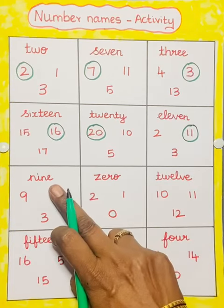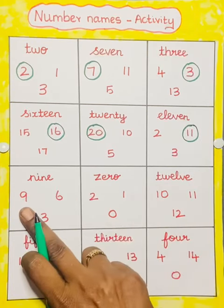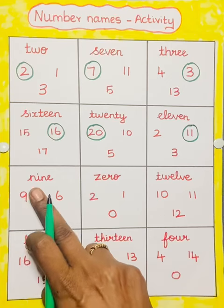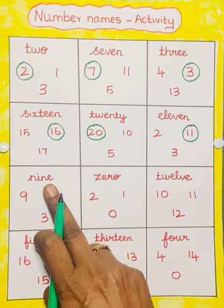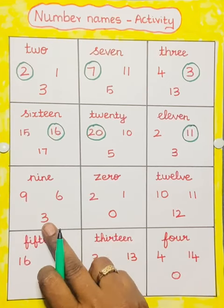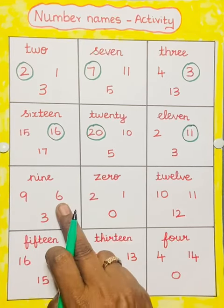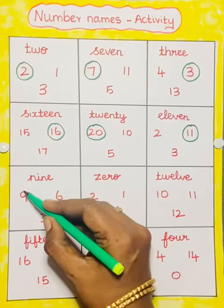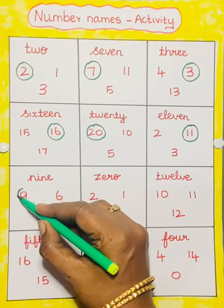Next one: 9. N-I-N-E. This is 9. This is 3. 6. 9. So we have to circle 9.